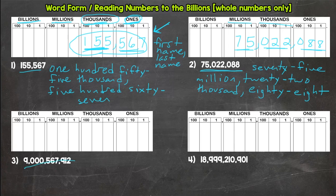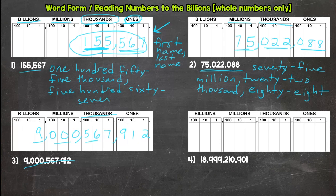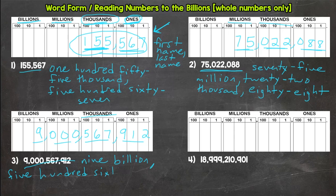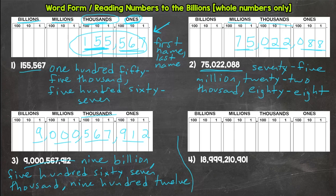Now let's go to the billions. Sorry — I crossed that number out accidentally, I meant to underline it, but we'll be all right. We have nine billion. We do not have anything in the millions, so we don't need to mention it. So: nine billion, five hundred sixty-seven thousand, nine hundred twelve. Nine billion — nothing in the millions — five hundred sixty-seven thousand, nine hundred twelve.